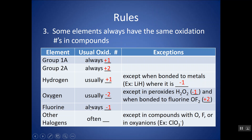Fluorine is always minus one. Other halogens are often going to be minus one, except in many different instances you'll have to solve for it — especially in the polyatomic ions. We'll look at how to do that next.